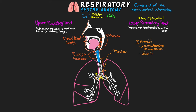After the primary bronchi, the next split gives us the lobar bronchi, also called secondary bronchi, which carry air to each lobe of the lung — three on the right and two on the left, matching the number of lobes. From there we have the segmental bronchi, or tertiary bronchi, branching further to carry air to each segment of a lobe. Finally, the subsegmental bronchi represent the fourth, fifth, and sixth order branchings, continuing to branch outward until we reach the bronchioles.